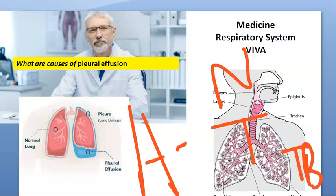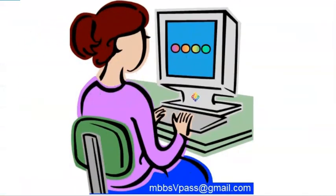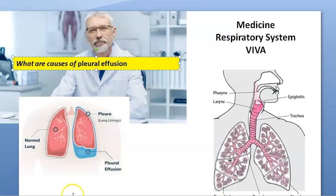Bleeding diathesis, anticoagulant therapy, acute hemorrhagic pancreatitis — all those can cause hemothorax. Right-sided pleural effusion will mostly be because of some liver issues — rupture of amoebic liver abscess, cirrhosis of liver, etc.